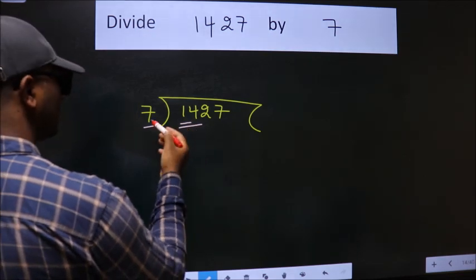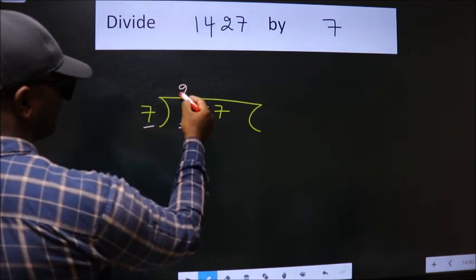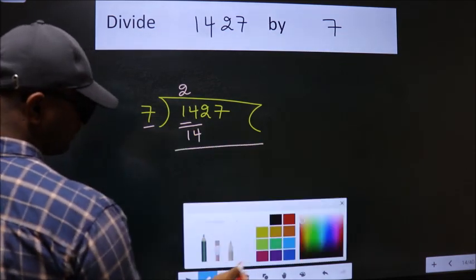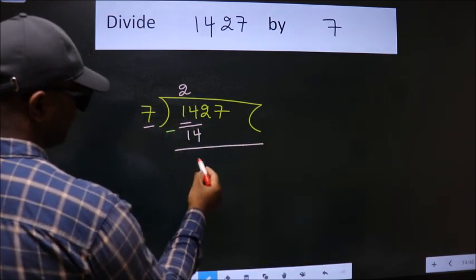When do we get 14 in 7 table? 7 twos, 14. Now, we should subtract. We get 0.